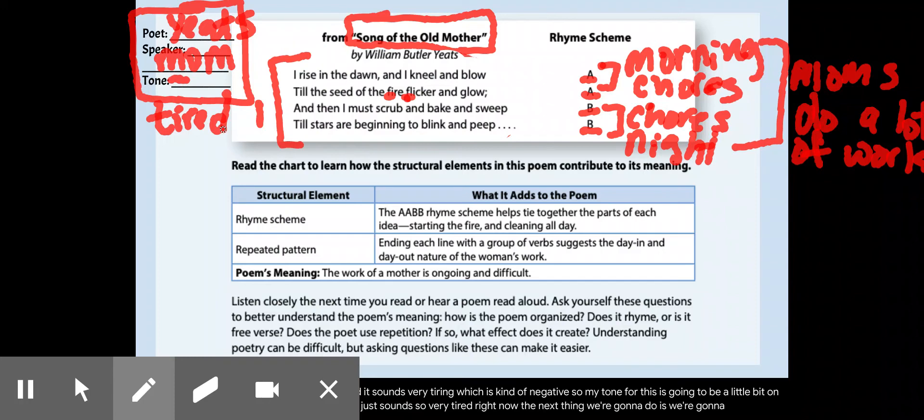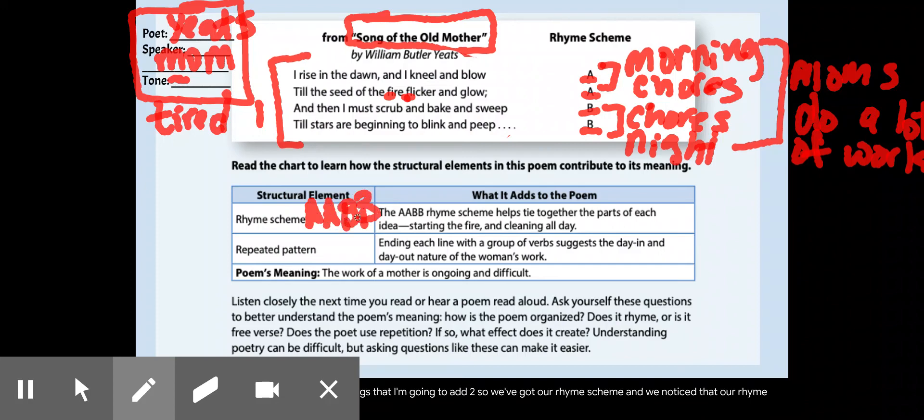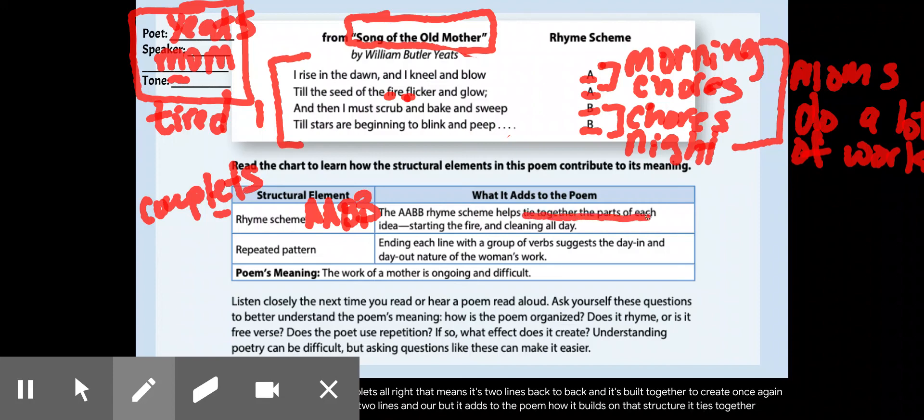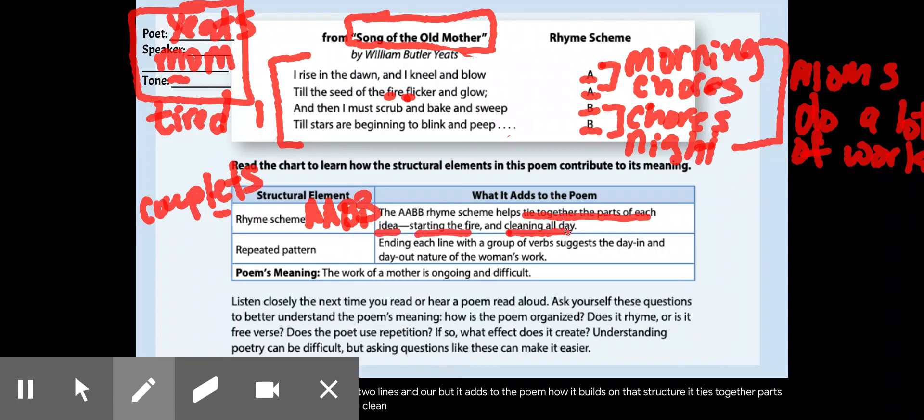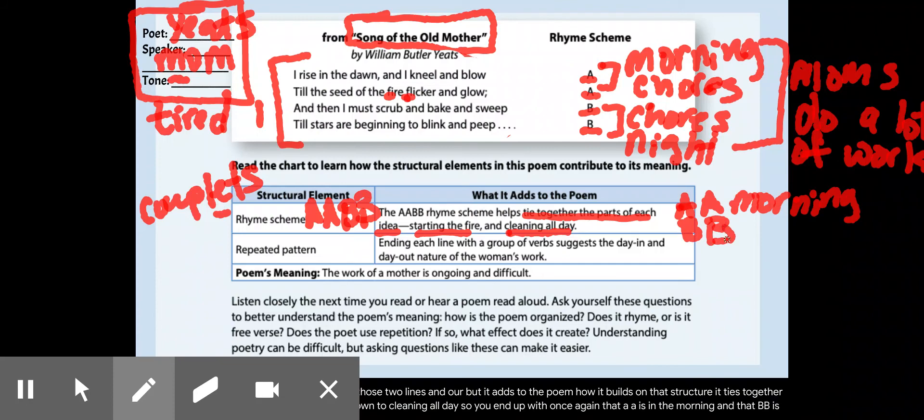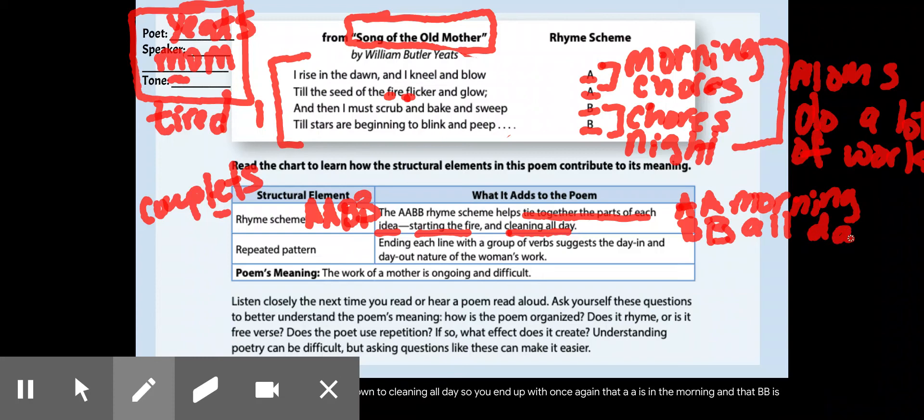Now, the next thing we're going to do is we're going to look at our chart, which goes over a few things that I'm going to add to. So, we've got our rhyme scheme, and we notice that our rhyme scheme is A, A, B, B, which gives us what is called couplets, right? That means it's two lines back to back, and it's built together to create, once again, those building blocks, that unity between those two lines. And what it adds to the poem, how it builds on that structure, it ties together parts of each idea, starting the fire all the way down to cleaning all day. So, you end up with, once again, that A, A is in the morning, and that B, B is all day tonight. So, that way, you can see that a mom's work is never done from the moment she gets up until she goes to bed.